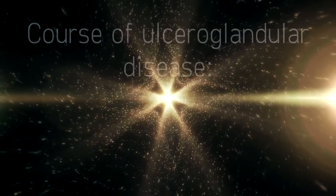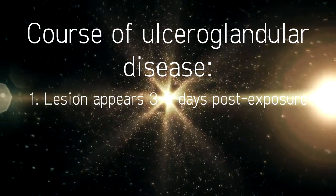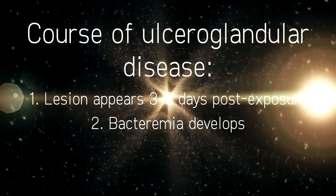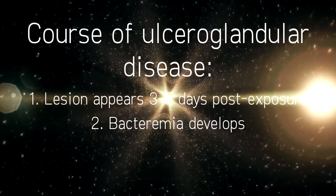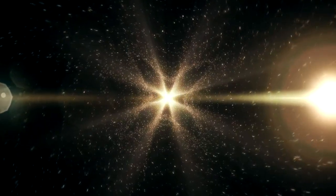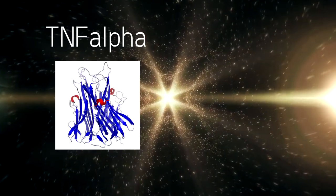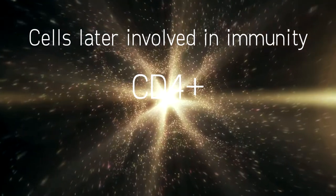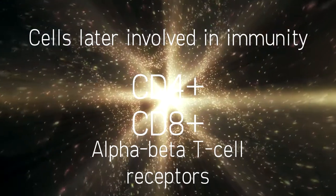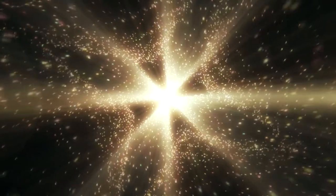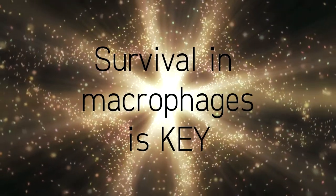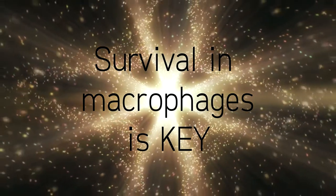For the most common form, ulceroglandular tularemia, the skin lesion appears at the site of infection 3-5 days after exposure. Bacteremia develops, and the coccobacillus avoids lysis by complement through its protective capsule. Early lines of host defense include TNF-alpha and interferon-gamma pathways. Subsequent lines of defense involve CD4, CD8, and alpha-beta T-cell receptor cells. Though some infection is eliminated via immune response, the pathogenicity of tularemia strains depends on their ability to survive within macrophages.